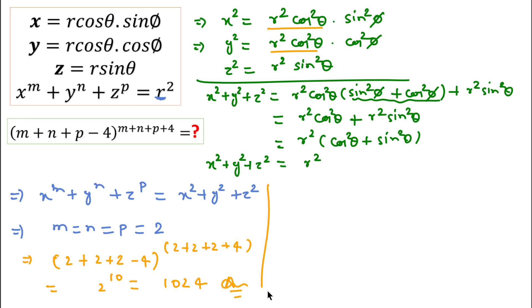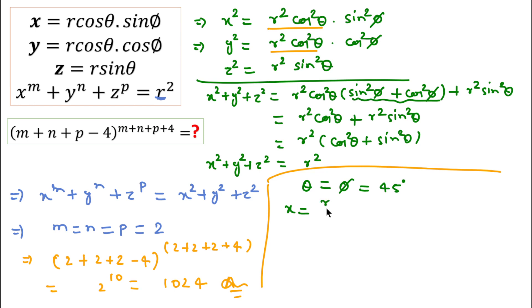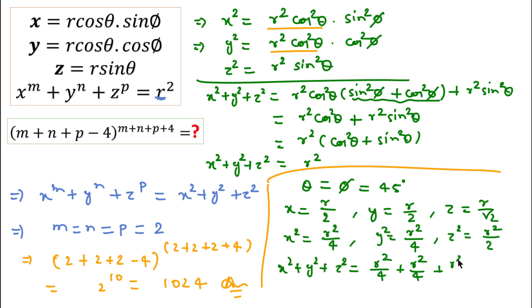We can also solve this by considering theta equal to phi equal to 45 degrees. Then x equals r over 2, because cos 45 is 1 over root 2 and sin 45 is also 1 over root 2, so this becomes r over 2. Similarly, y equals r over 2 and z equals r over root 2. Squaring these: x square equals r square over 4, y square equals r square over 4, and z square equals r square over 2. Adding: x square plus y square plus z square equals r square over 4 plus r square over 4 plus r square over 2, which equals r square.